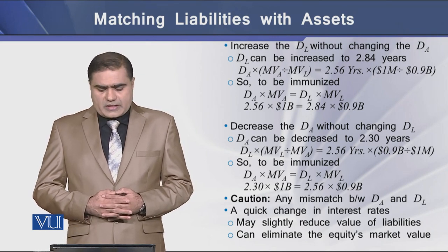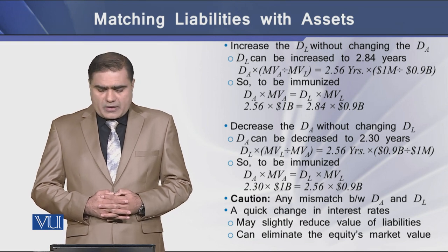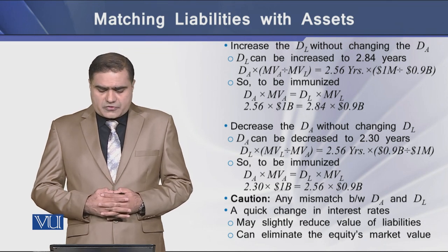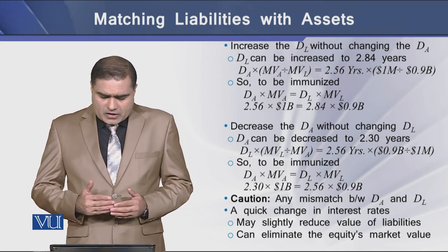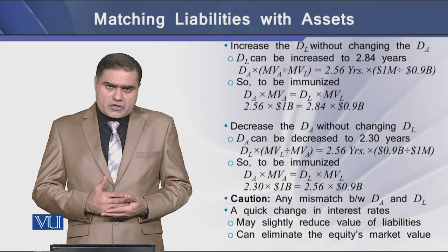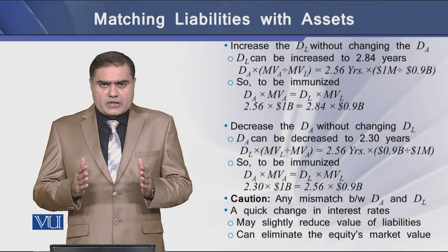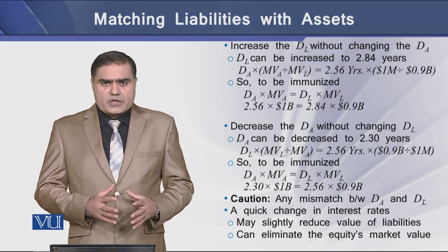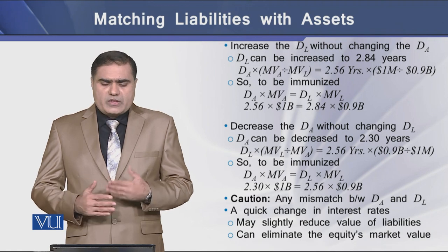The second suggestion is to decrease the duration of assets without changing the duration of liabilities. According to this approach, the bank should decrease the duration of assets to 2.23 years. In this way, the duration of the assets of the bank will equal the duration of the liabilities of the bank, and both will be matching with each other.